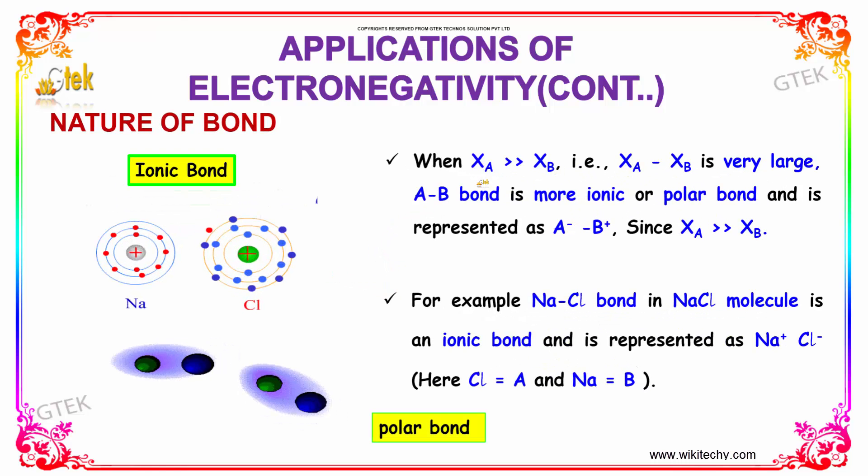When xA is really greater than xB, xA minus xB is very large. The AB bond is more ionic or polar bond and it is represented as A minus B plus, since xA is really greater than xB. For example, the sodium chloride bond in NaCl molecule is an ionic bond and it is represented as Na plus and Cl minus, where Cl is A and Na is B.